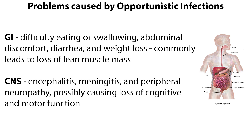Numerous GI problems are associated with opportunistic infections and antiretroviral therapy, including difficulty eating or swallowing, abdominal discomfort, diarrhea and weight loss, which commonly leads to loss of lean muscle mass. Many opportunistic infections affect the central nervous system, including encephalitis, meningitis, and peripheral neuropathy, possibly causing loss of cognitive and motor function.